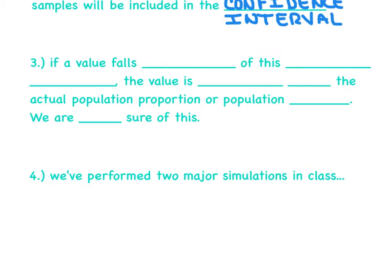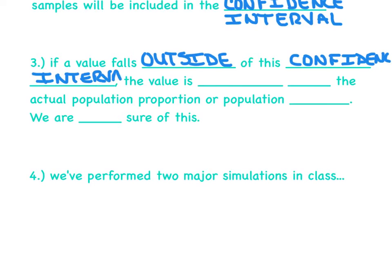Number three: if a value falls outside of this confidence interval, the value is probably not the actual population proportion or population mean. We are 95% sure of this. Notice we said probably right here. We didn't necessarily give a stone-cold lock on it. We just said we're really confident that it's not. There's really only a 5% chance that it could fall outside of our confidence interval.